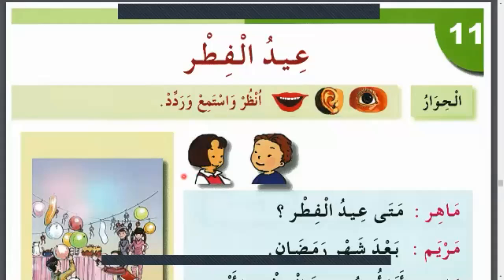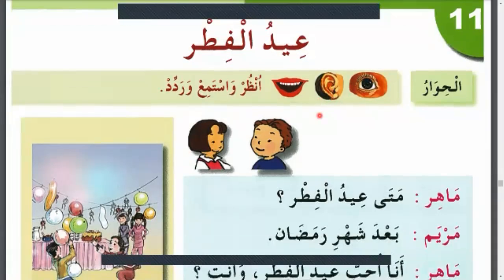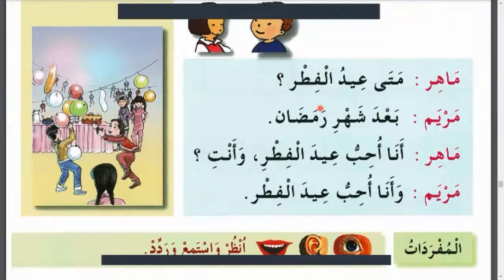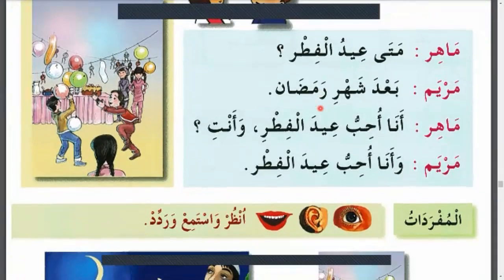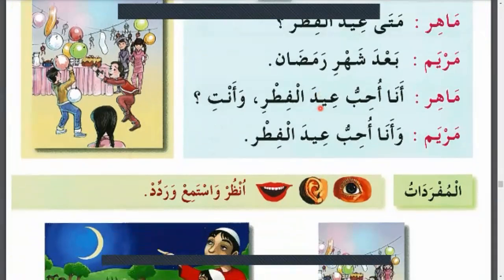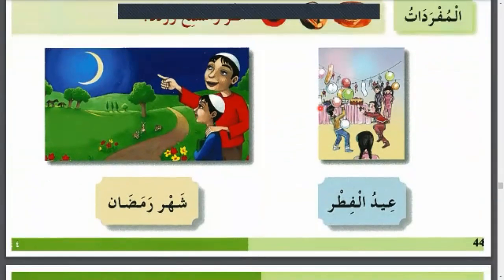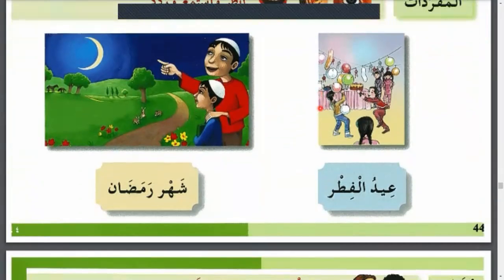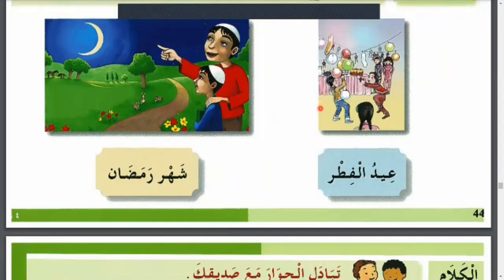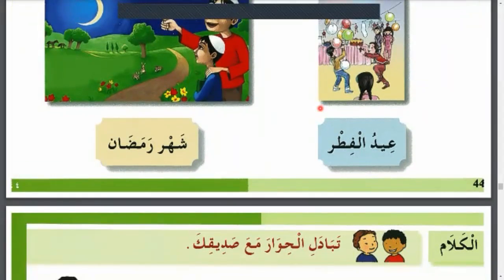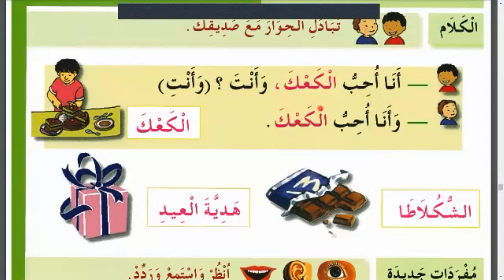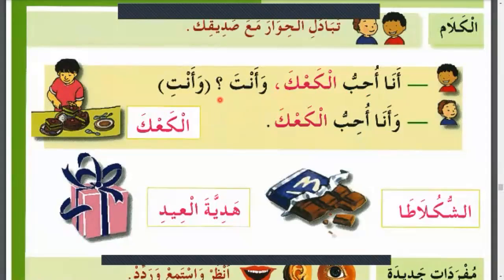You will also take some lessons from the book Ahib al-Lugha al-Arabiya. The topic is Eid al-Fitr. In a dialogue between Maher and Maryam: Maher asks when is Eid al-Fitr, and Maryam answers: after the month of Ramadan. Maher says: I love Eid al-Fitr, and Maryam agrees. You can describe the activities we do in Eid al-Fitr and what activities we do in Ramadan.